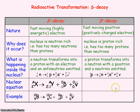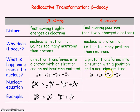The equation for the beta positive transformation shows the positron has Z number plus one (its charge is plus one) and A number zero (not a nucleon). The neutrino has Z number zero (neutral) and A number zero (not a nucleon). Again, you can see the A numbers and Z numbers are conserved.